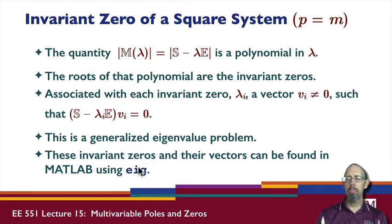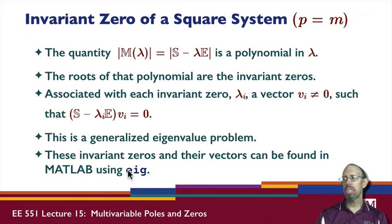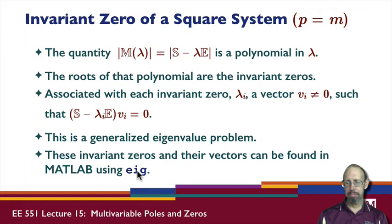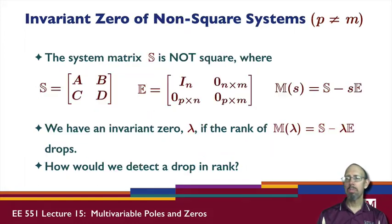Remember, there may be zeros at infinity. In general, when you use EIG, it will give zeros at infinity and vectors associated with those. That is, you'll have a zero at infinity and a vector associated with it. That's what happens when we have a square system, when P equals M.